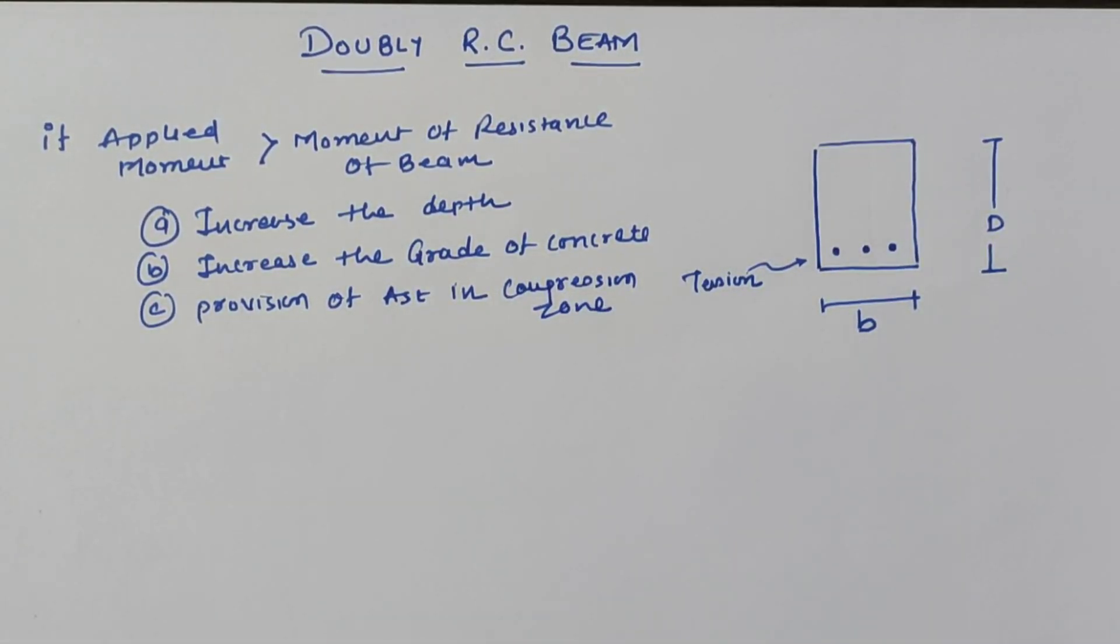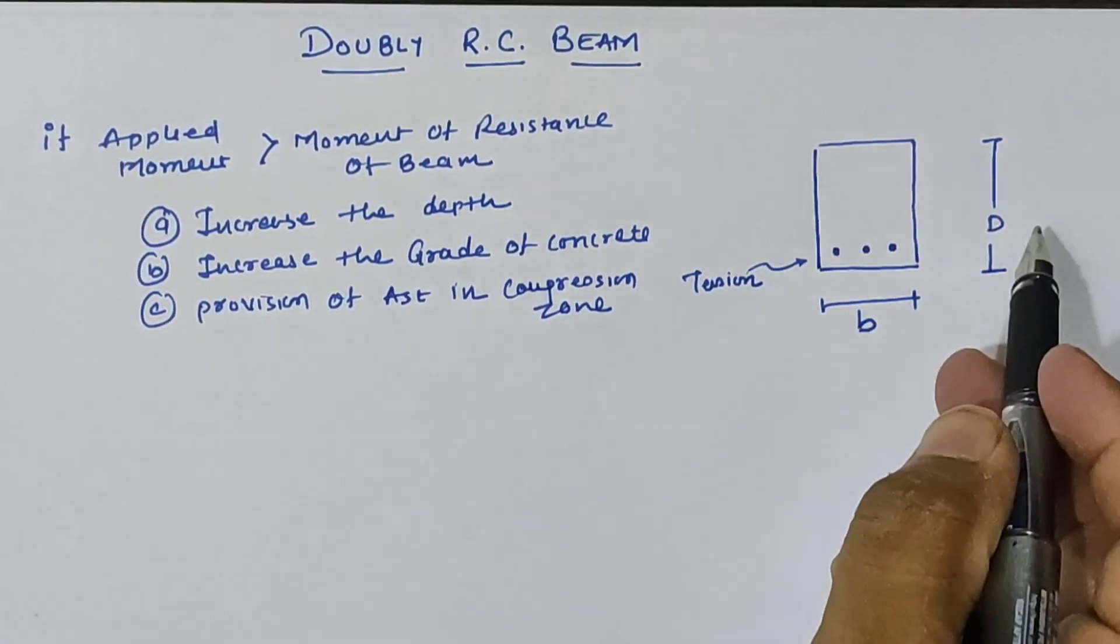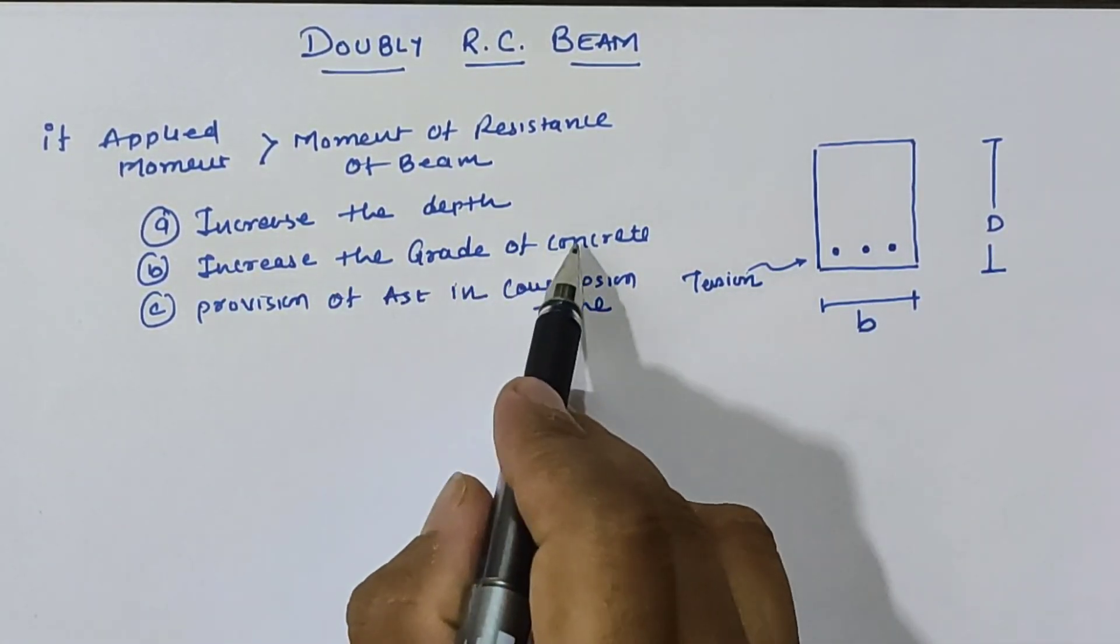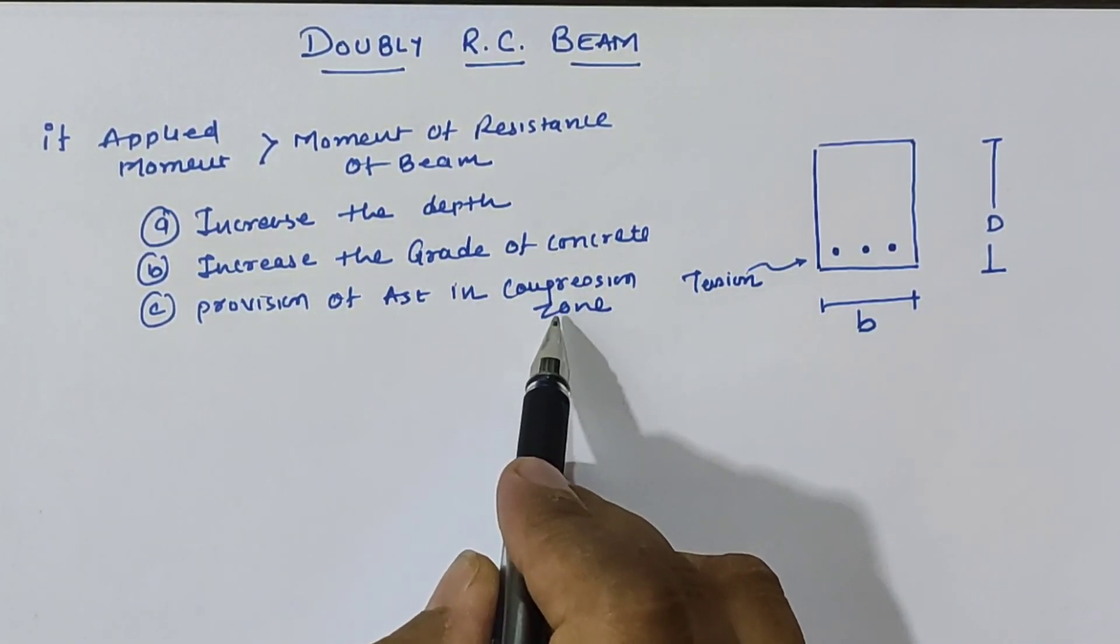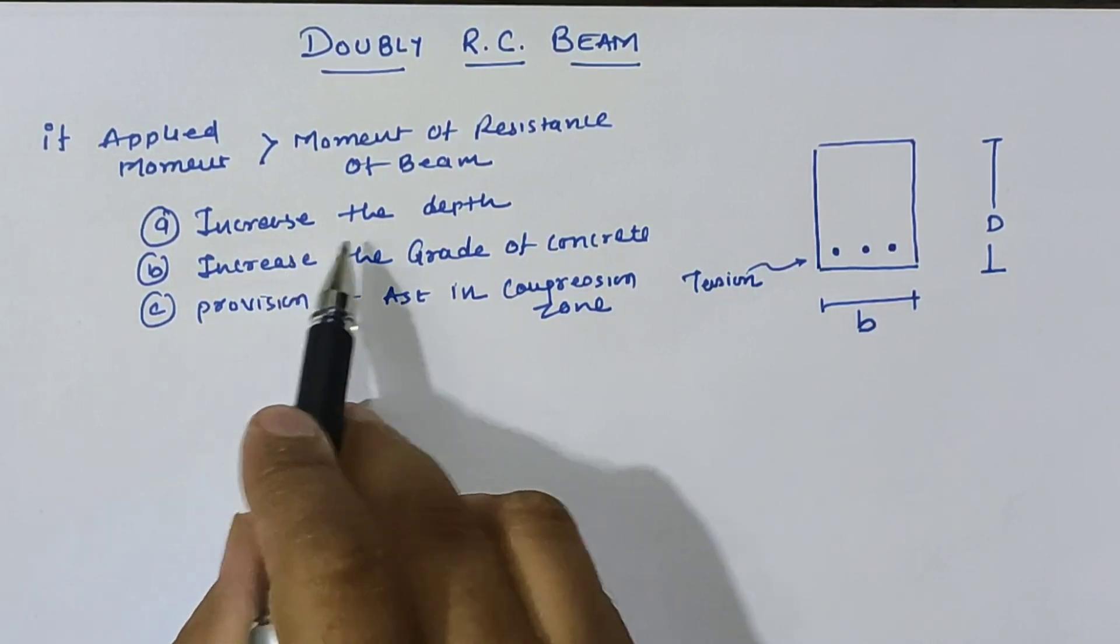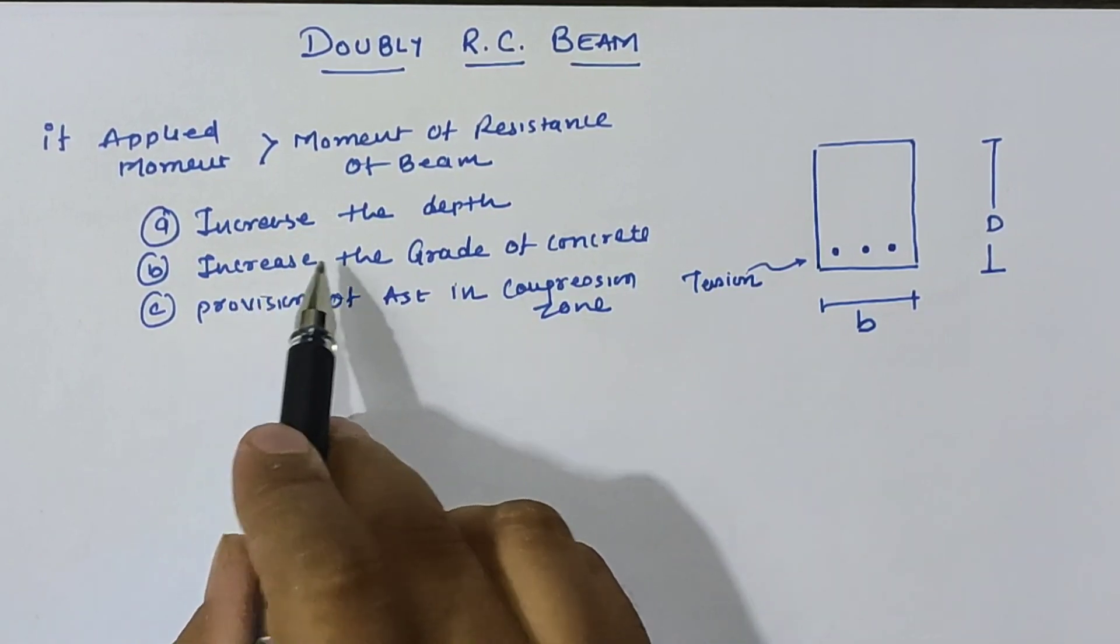When applied moment is greater than moment of resistance: first is increase the depth of the beam, second is increase the grade of concrete, and third is provision of area of steel in the compression zone.